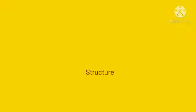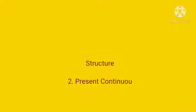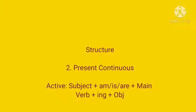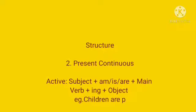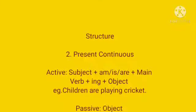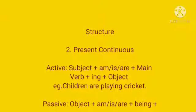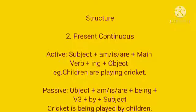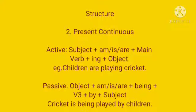In present continuous tense, the structure in active voice is subject plus be form of verb plus main verb plus ing plus object. And the example is children are playing cricket, but the same example changes into passive voice as cricket is being played by children.